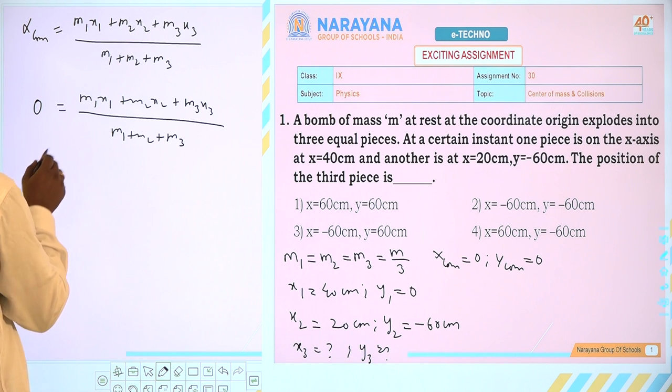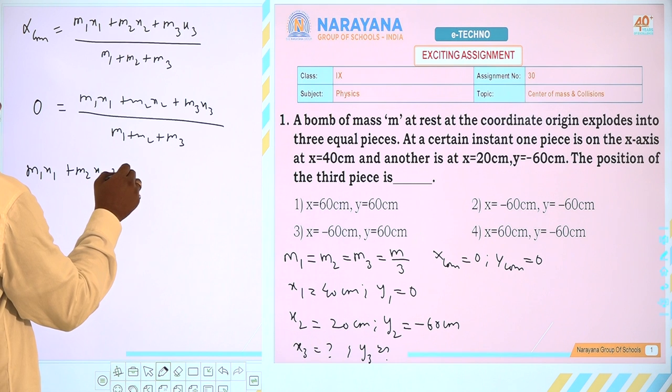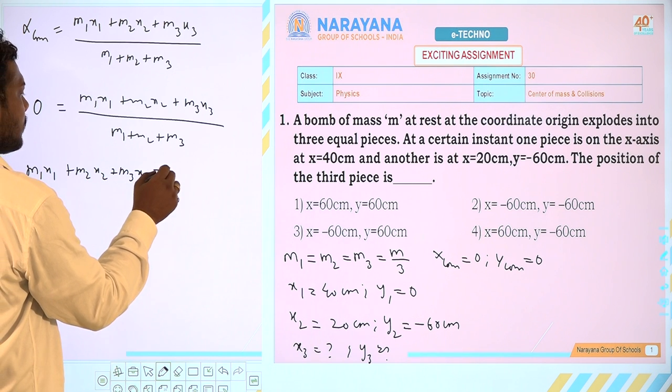So this total will be multiplied with that, it will also equal to 0. So finally, we will get M1x1 + M2x2 + M3x3 = 0.